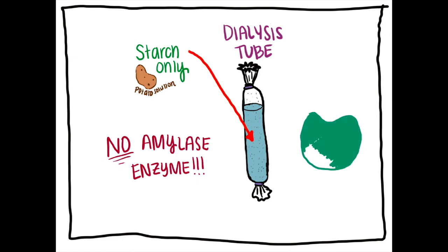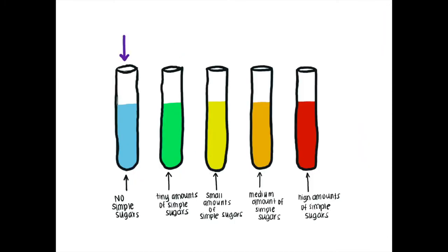The second part of the experiment that we're doing now shows what would happen to the small intestine absorption if the small intestine didn't have enzymes. In this case, the water tested from outside the dialysis tube would be mixed with Benedict's and not change color since there are no simple sugars. This is because the enzyme wasn't there to break anything down.